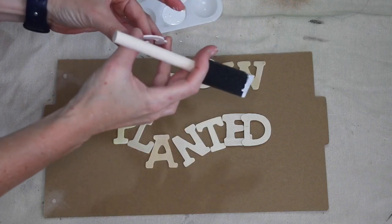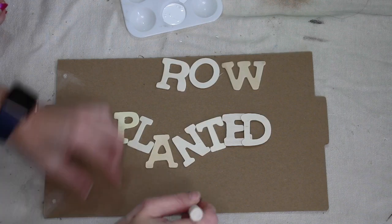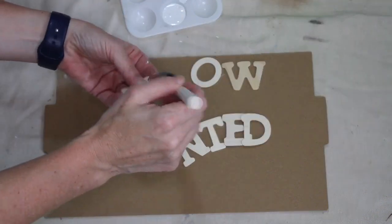Now here I will be doing grow where you are planted. You also could choose to do bloom where you are planted, but I only wanted to use one pack of letters and I only have one O, so that is why I chose to use the word grow.